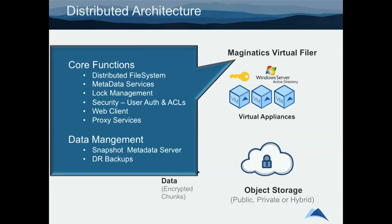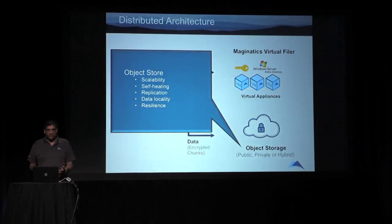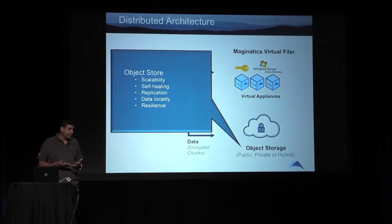On top of that, we use your existing security infrastructure to handle authentication and ensure users have rights to access the files they're requesting. We also run web clients and proxy services within the virtual filer's core function. And as you'd expect, we provide things like snapshots and disaster recovery as core data management functions. The last piece of the solution is the object store — customer provided — which offers scalability up to petabyte scale and beyond, is self-healing, has built-in replication policies, reduces storage cost and management effort, and makes it easy to configure multiple nines of availability.